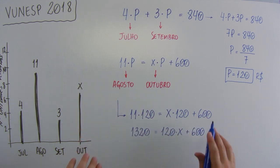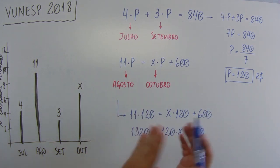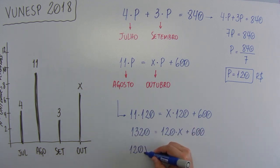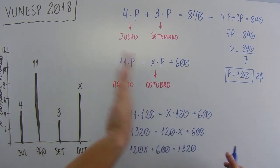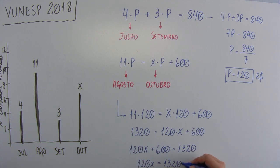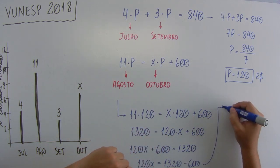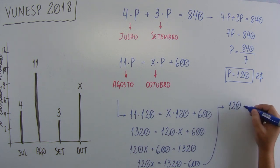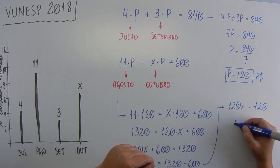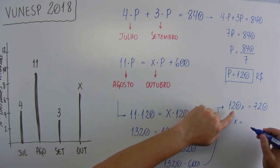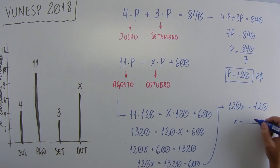Tudo que tem X de um lado, tudo que não tem do outro. Vai ficar 120X igual a 1320. Esse 600 que está positivo vai passar negativo. 120X igual a 1320 menos 600, 720. X igual a 720 dividido por 120. X igual a 6.